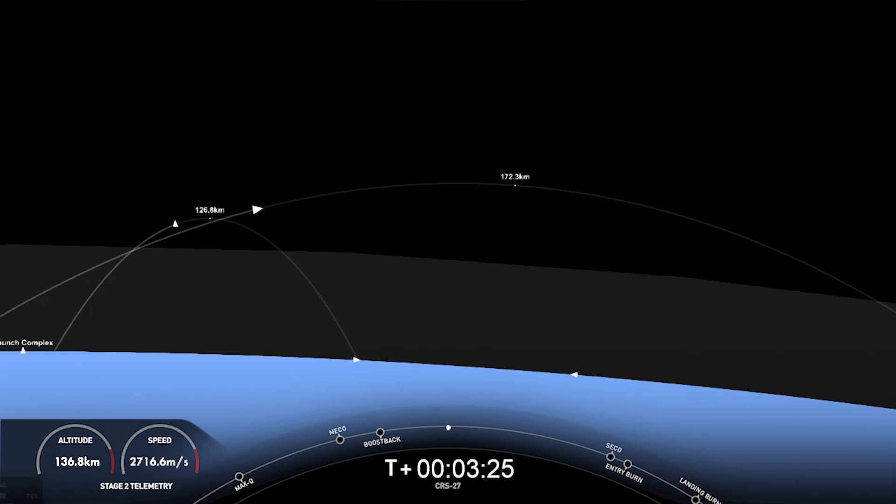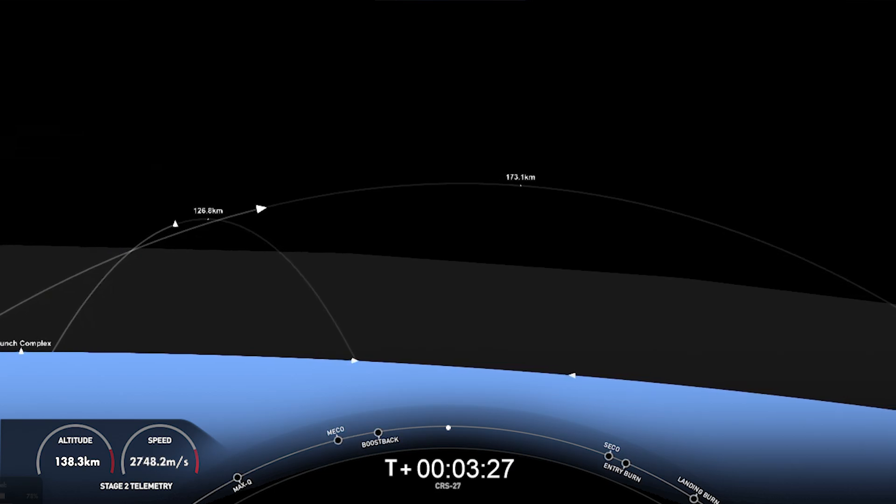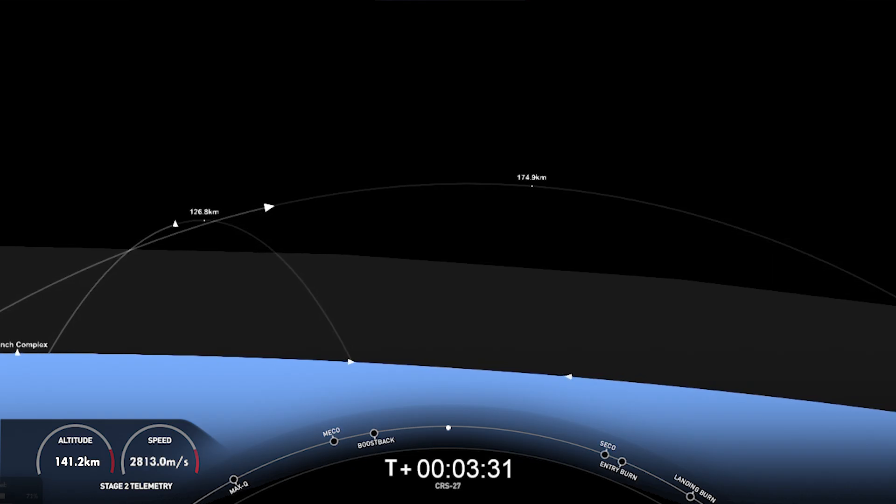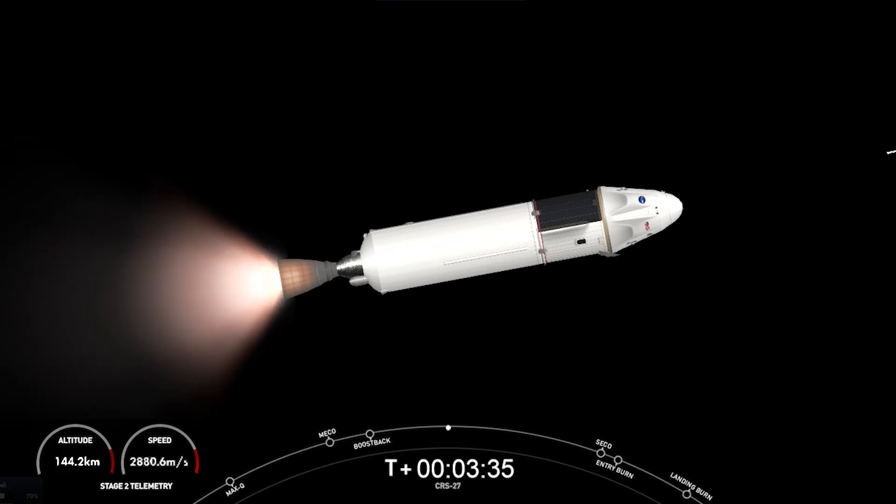On the left side of your screen is the Falcon 9 first stage that is making its way back to Earth. And on the right side is the second stage. The second stage, and you can see that MVAC engine there.